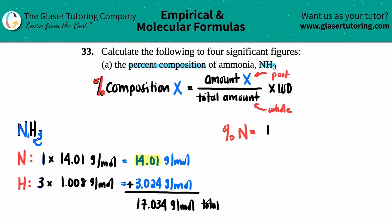So for nitrogen, I have 14.01 and divide that by the total amount. This was the total amount, the 17.034. And all you got to do is times it by 100.